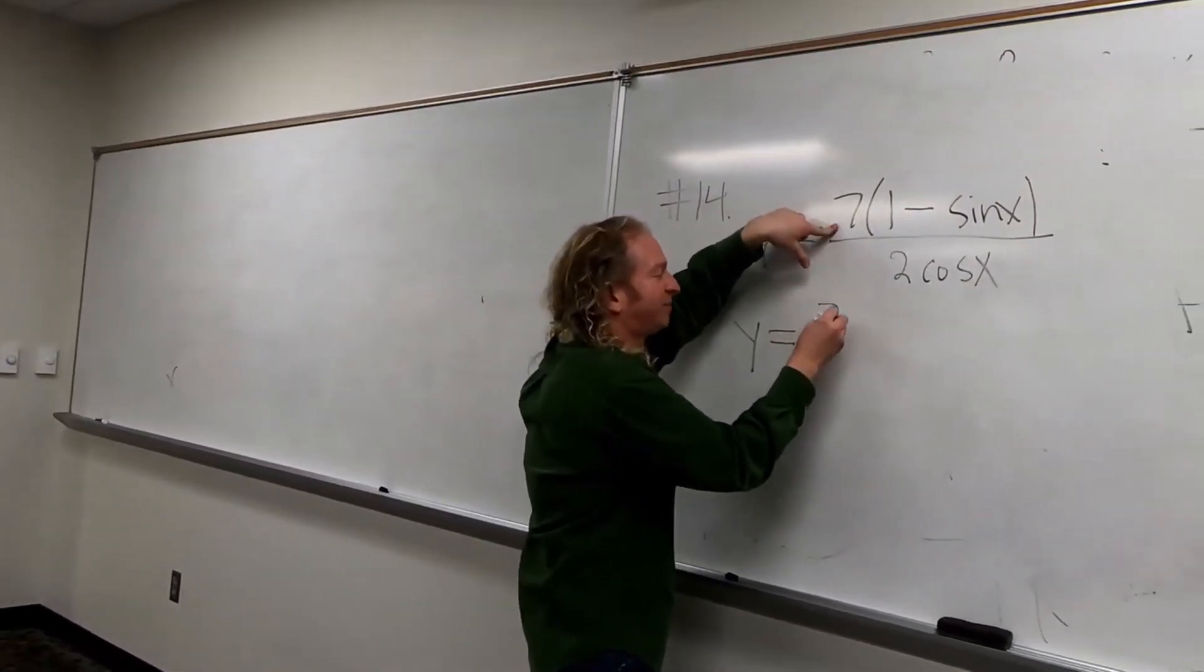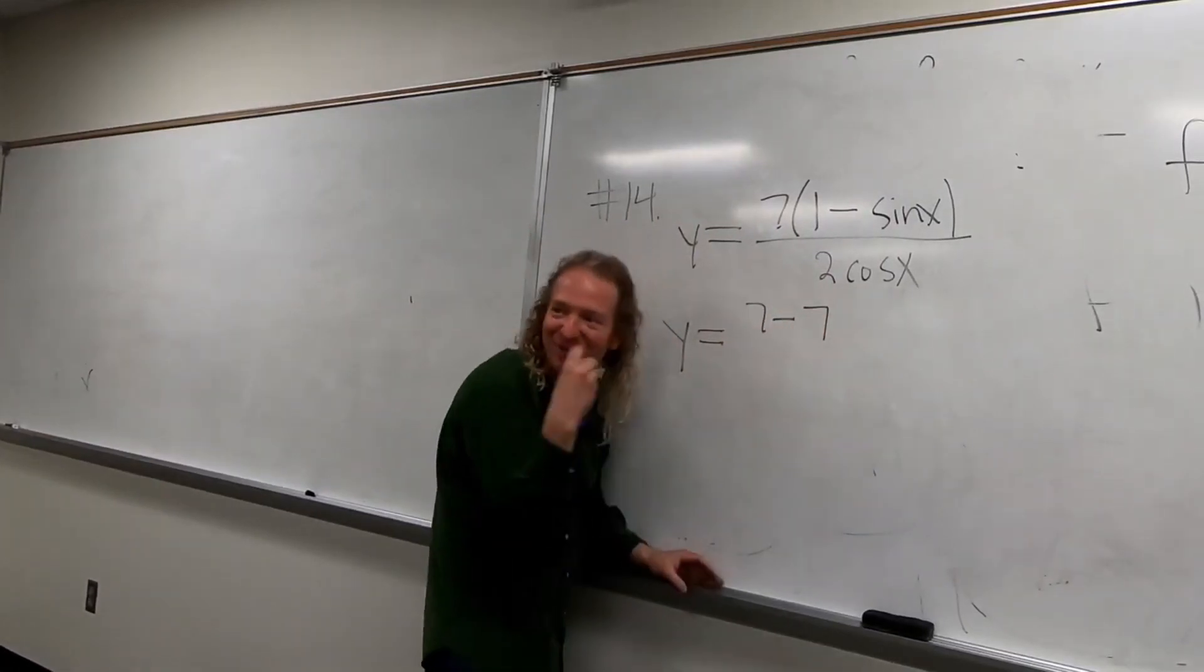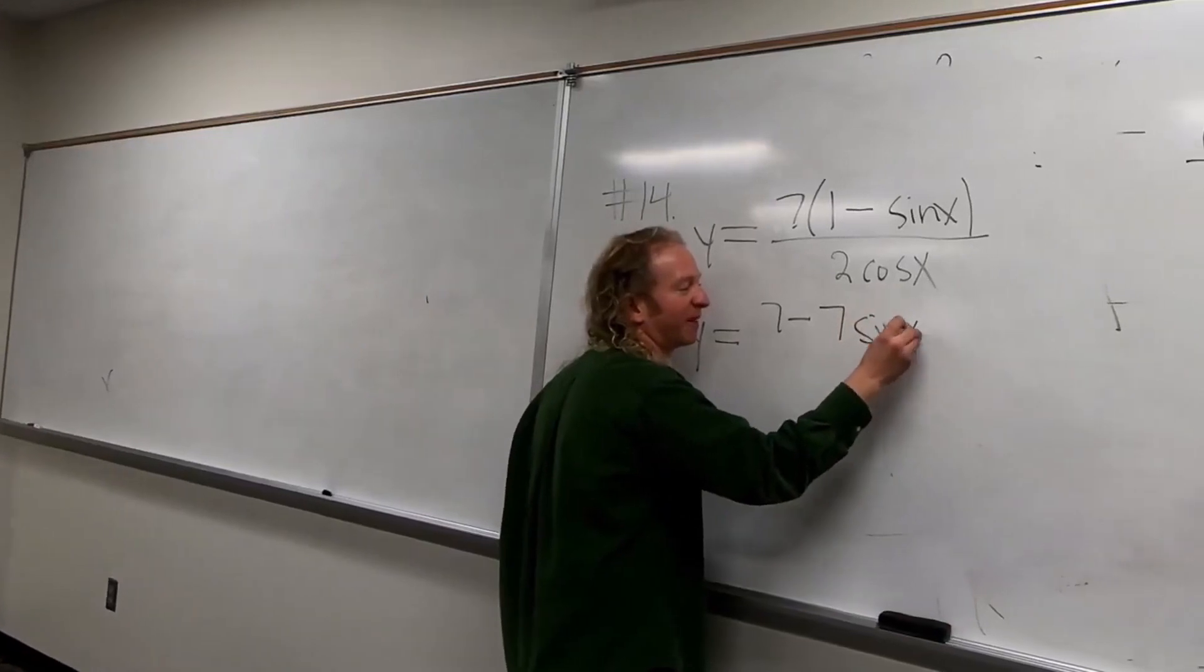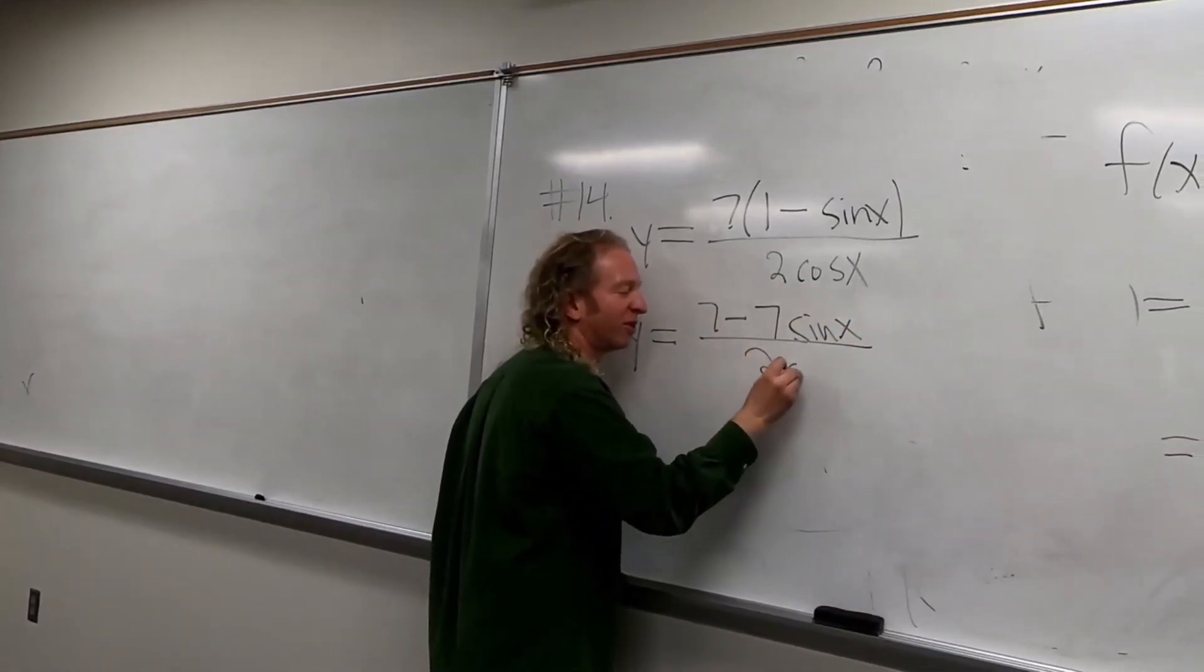So 7 times 1 is 7. 7 times sine is 7 sine. So we're here. It's all over 2 cosine x.